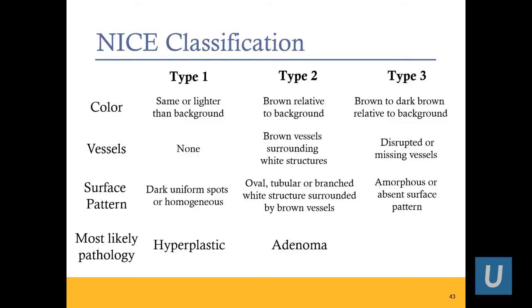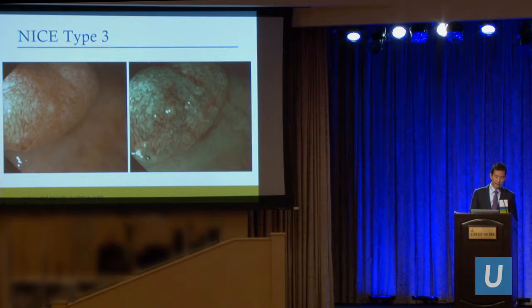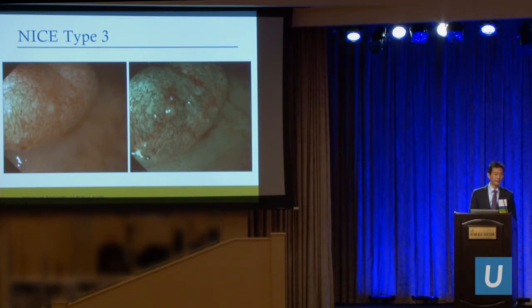Type 3: dark compared to the background, disrupted or missing vessels — that's a very important distinction — and an amorphous or absent surface pattern. These are considered deep submucosal invasive cancers. Here's the white light picture and the narrowband imaging picture: you can see the loss of tubular structures and missing vessels. This is more concerning for a cancer. It's not rocket science — a simple push of a button on your scope can help you differentiate between a hyperplastic polyp, an adenoma, and a cancer.